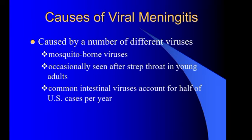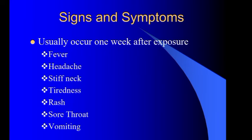The causes of viral meningitis include mosquito-borne viruses and occasionally it is seen after a strep throat infection. It mainly occurs by throat infection, and through the cribriform plate it can spread to the meninges of the brain via the respiratory route. Commonly, enteroviruses account for half of US cases per year, and enterovirus is the main etiological cause of viral meningitis.